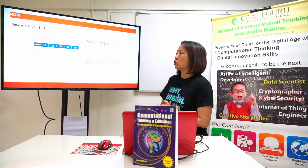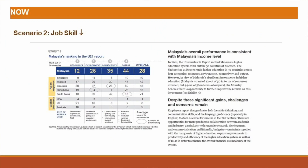Second scenario: the job skills of our local employees are dropping. Reports show that employers say our graduates lack critical thinking and communication skills. So here, the combination of the advancement of technology and thinking skills matters — because we cannot just feed our children with knowledge, we have to mold them to be thinkers. That's why we talk about computational thinking here.